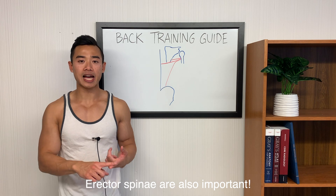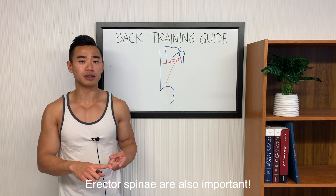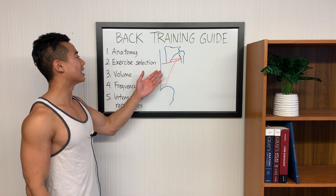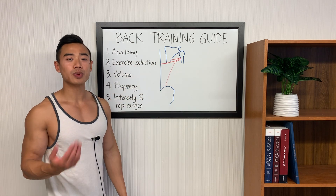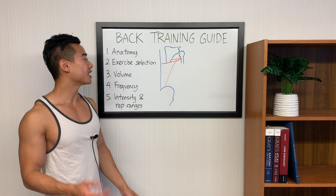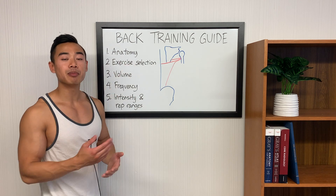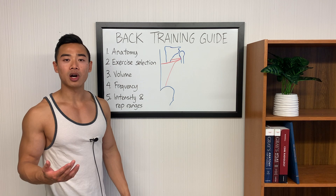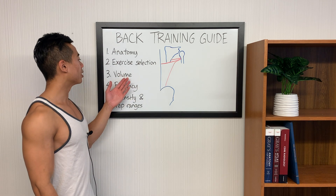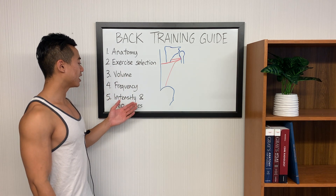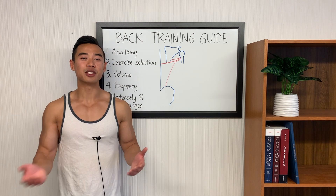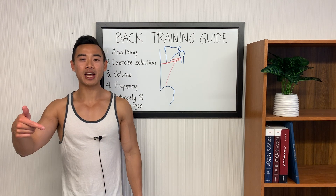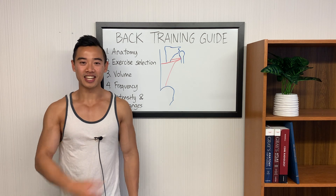Today we're going to be focusing on the lats and the teres major. Quick outline for today: we're going to start off by talking about the anatomy of the lats and teres major, and once we understand the anatomy, this will help us guide our exercise selection in putting together our program. After that, we'll talk about other variables like volume, frequency, intensity, and rep ranges. We will be getting to the other muscle groups in other videos, so make sure you subscribe to the channel so you don't miss out.